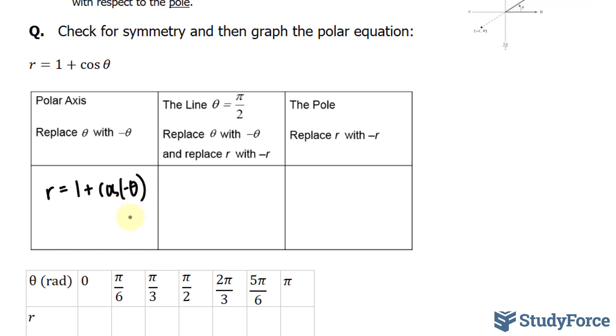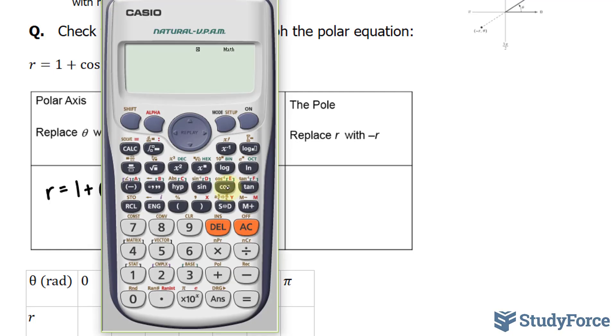And it turns out that if you place a negative angle into cosine, the output doesn't change. Take for example, cosine of 60, it's 1 over 2. And if I take cosine of negative 60, I still get 1 over 2.